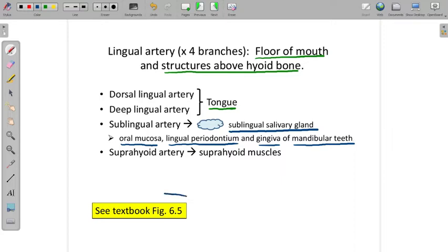There's a suprahyoid artery, which supplies several of the suprahyoid muscles. Again, take a look at figure 6-5 in your book. I would have put those figures in the lectures, but I don't have access to the illustrations in the textbook. I'm working on that, but they haven't arrived yet.